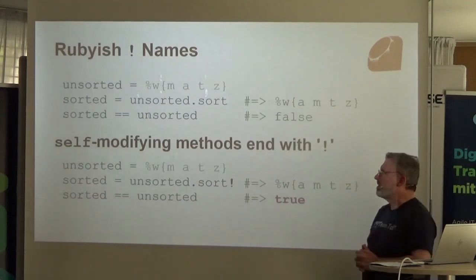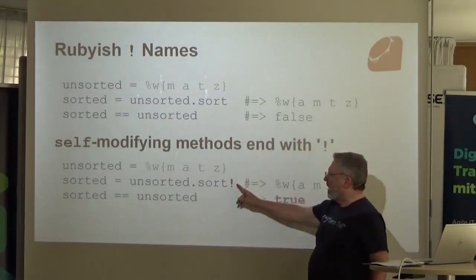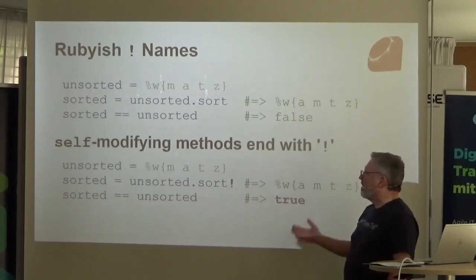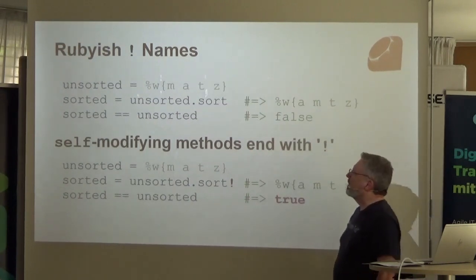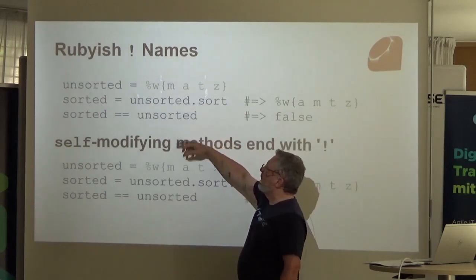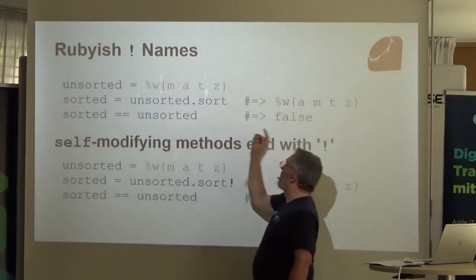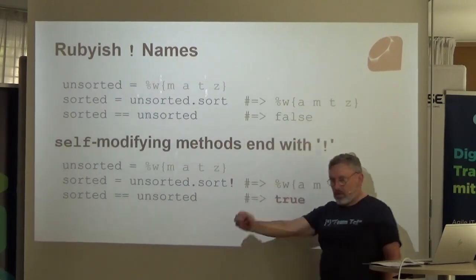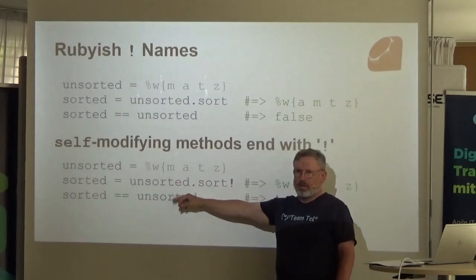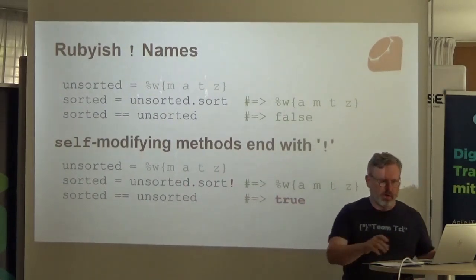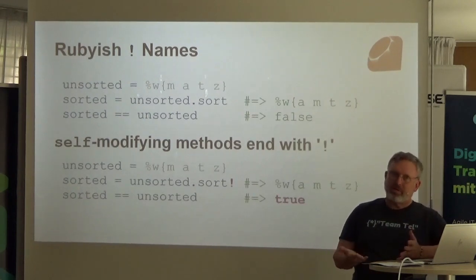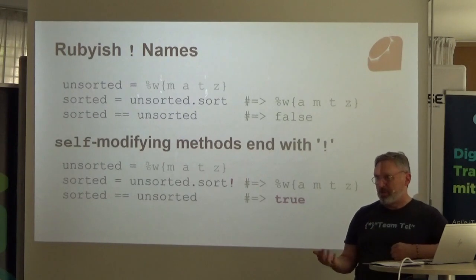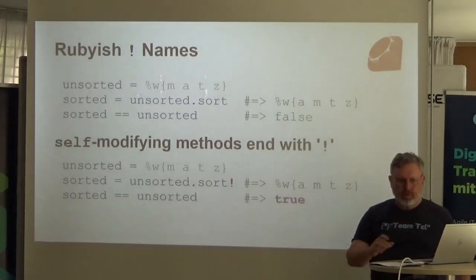Another thing Ruby does is use the exclamation point — a bang — for operations that change the variable they're applied on. So there's a sort in Ruby that leaves 'unsorted' alone — they're still not equal. But there's also sort!, and it changes 'unsorted'. One of the things I remember when I came back to Tickle was I sometimes should have used a variable name and sometimes should have expanded the variable. I thought that might be a good use for this — we'll see an example.